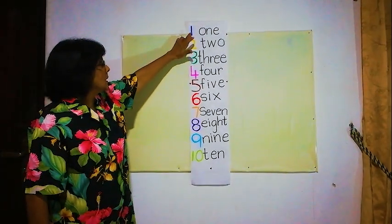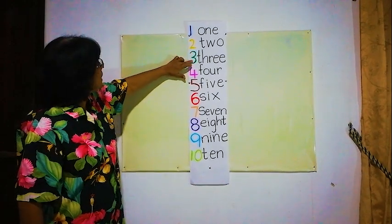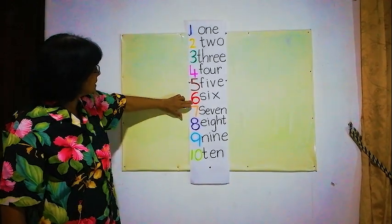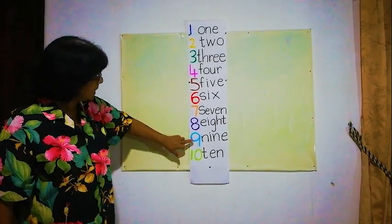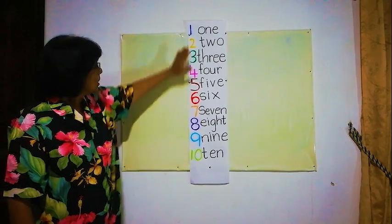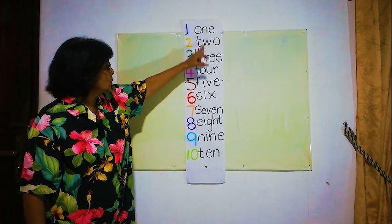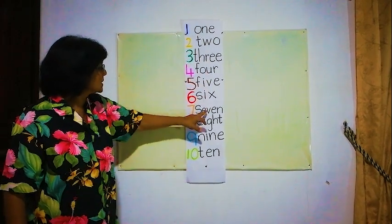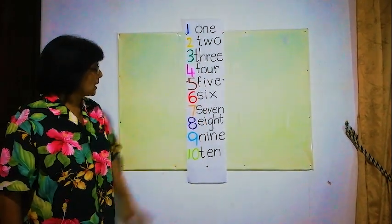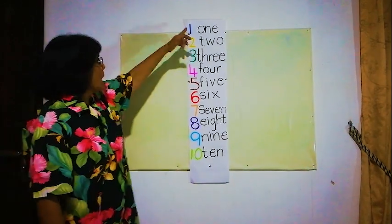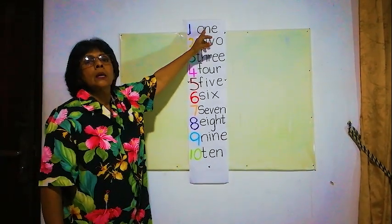Now here the numbers 1, 2, 3, 4, 5, 6, 7, 8, 9, 10. Now here the words here 1, 2, 3, 4, 5, 6, 7, 8, 9, 10. Now we will read the number and the letters.